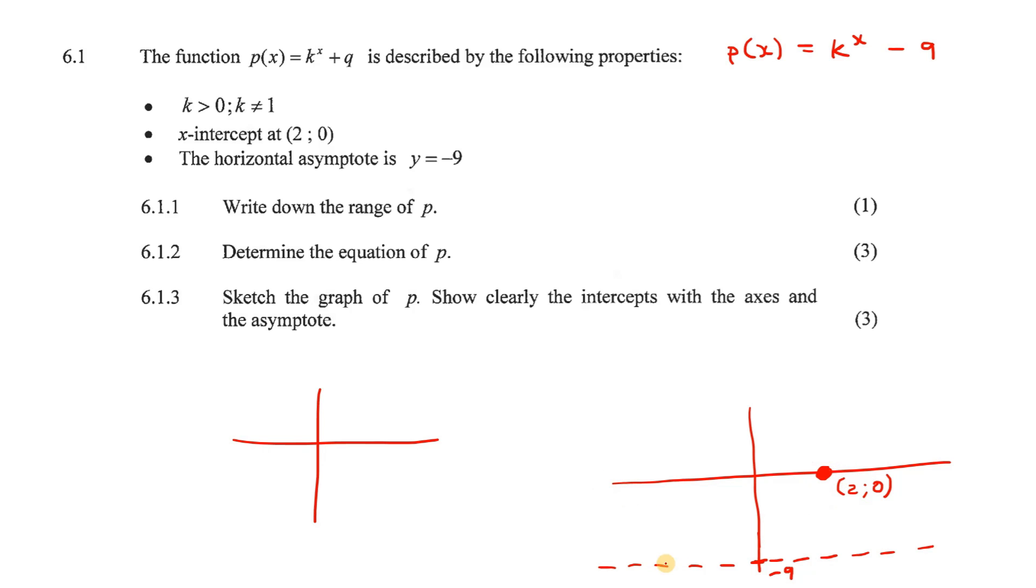They've told us that there's this point, and the graph can never cross over this line. So it has to be somewhere over here. Because if it was underneath, then it will never be able to go through that point, because it's never allowed to go through here. So the graph is going to be somewhere above the dotted line. We don't need to know what it looks like, because the graph always gets very close to the asymptote.